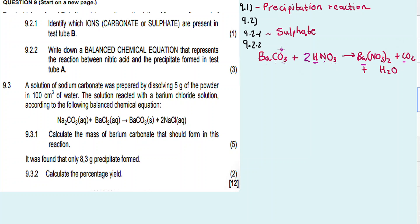So the equation is balanced. There are different techniques to balance a chemical equation — this is one of them. The approach used here checks each element in turn. Once oxygen checks out, all elements are confirmed balanced. The balanced equation is confirmed and we move on.